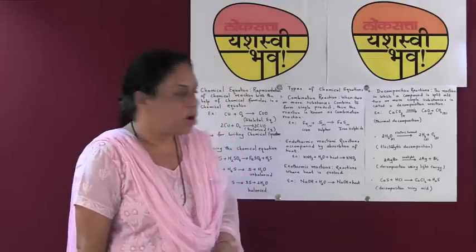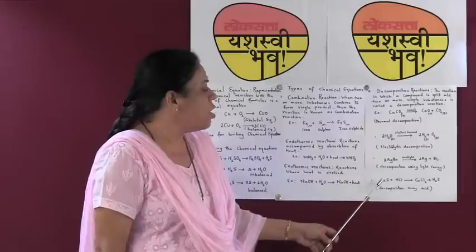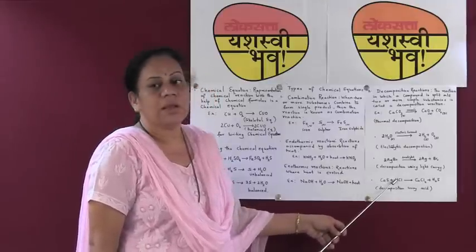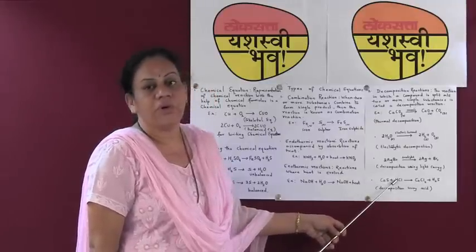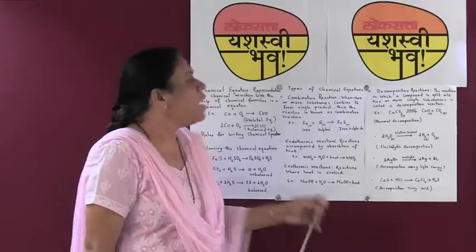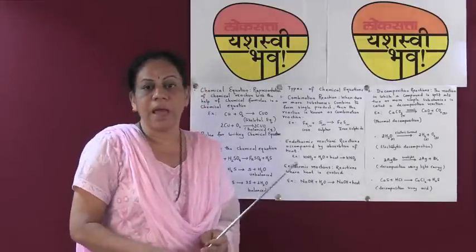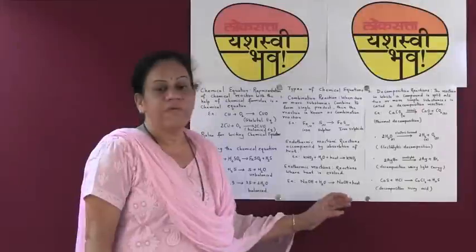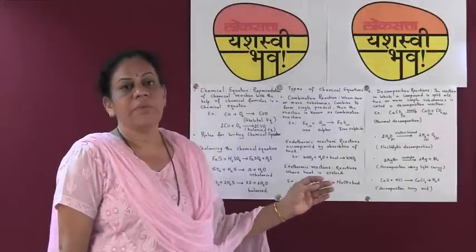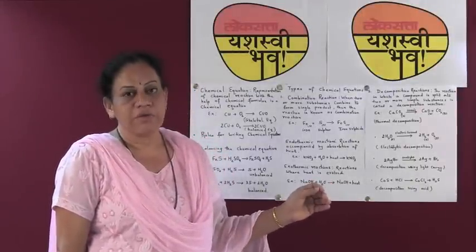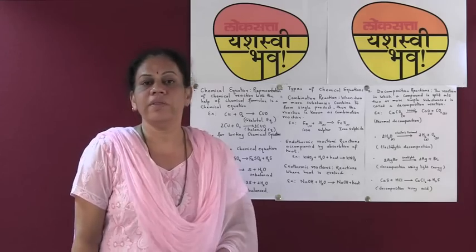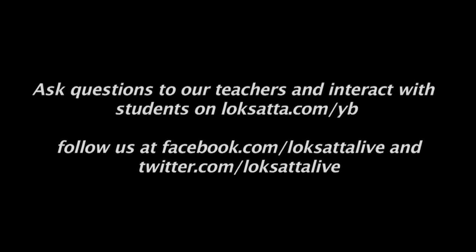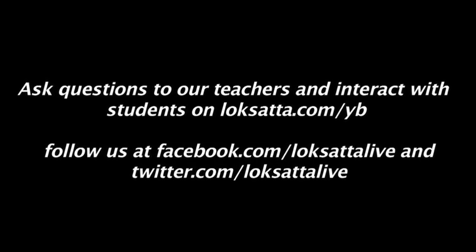So this decomposition of calcium sulphide takes place by using hydrochloric acid. We still have to discuss displacement reactions and other types of chemical reactions, which we will do in the next discussion. Thank you.